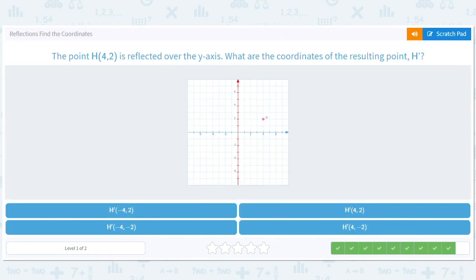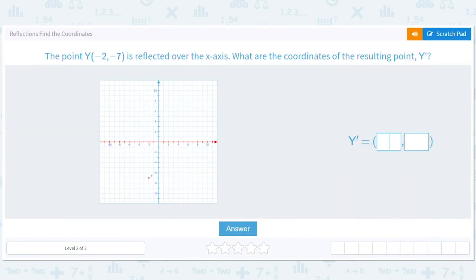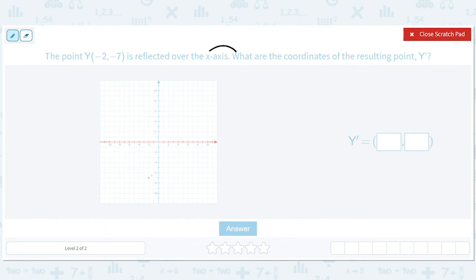This one they're just making us type it in, but it's the same idea. It's reflected across the x-axis, so what stays the same? The x stays the same, the y changes. You don't necessarily have to memorize that - you can always draw the picture and ask what's staying the same. It's the x - the x is -2 the whole time. So it should be (-2, 7).